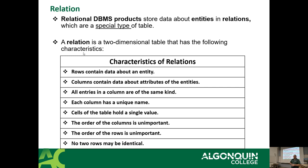Different countries have different rules on data. In North America, database systems that track people require a surname — a family name. If you're from India, for example, some people don't have last names, which is why I often get students where the data looks unusual.